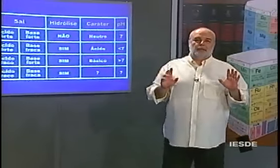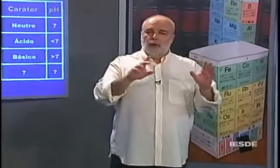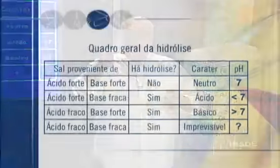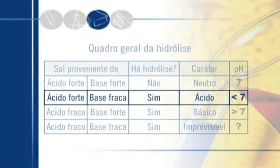Em todos os outros casos vai haver hidrólise, porque um dos dois — o ácido ou a base — pelo menos, vão ser fracos. No primeiro caso de hidrólise: o ácido de origem é forte, mas a base de origem é fraca. Há hidrólise? Sim. Se o ácido é forte e a base é fraca, predomina o caráter ácido. Teremos uma solução ácida e pH inferior a 7.